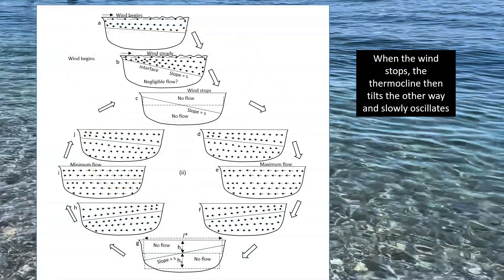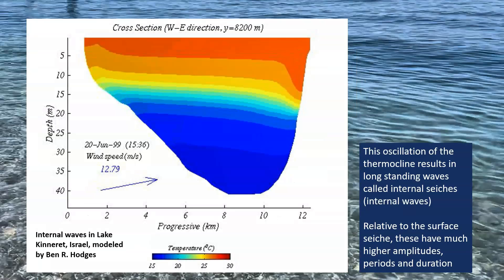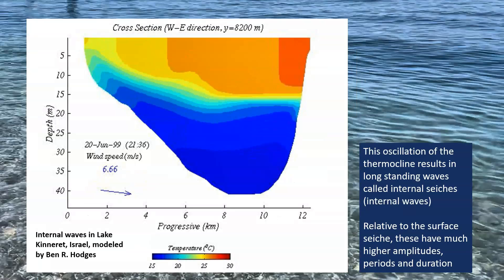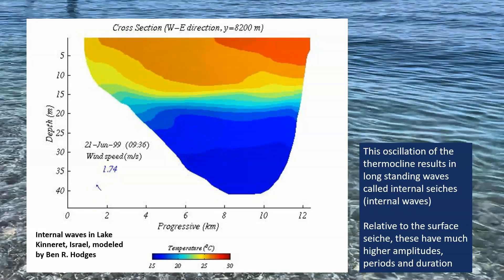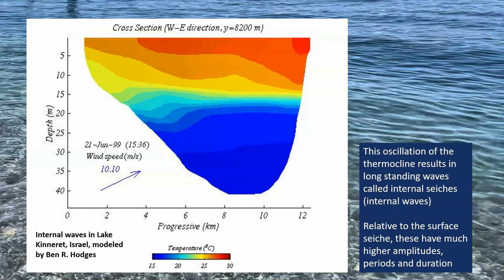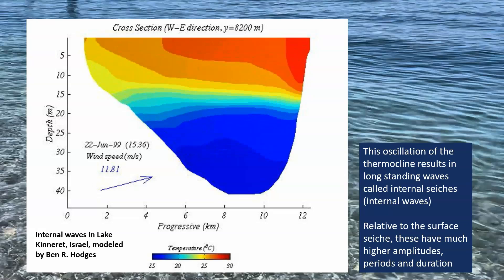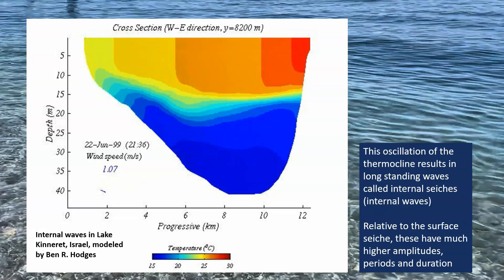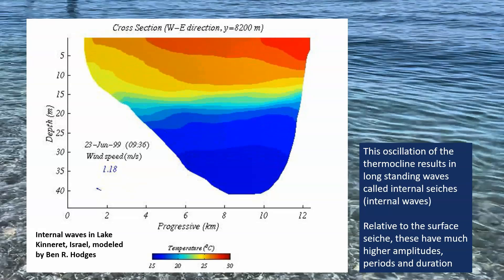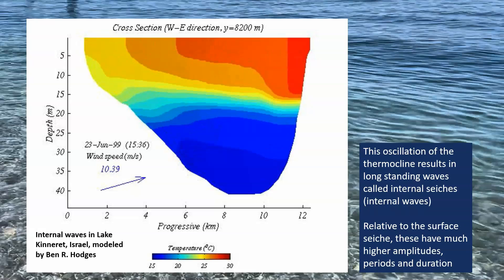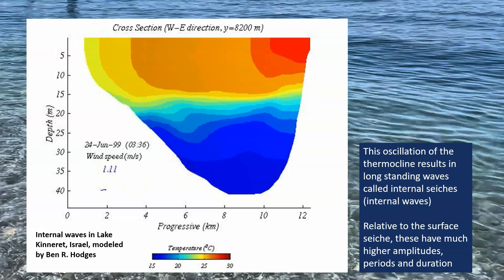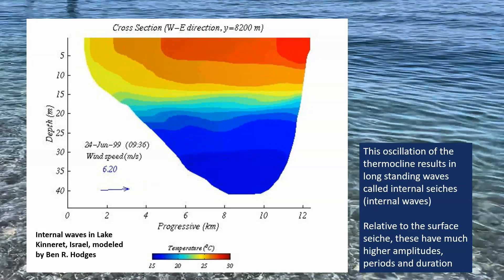When the wind stops, the thermocline tilts the other way and slowly oscillates. This oscillation of the thermocline results in long-standing waves called internal seiches or internal waves. Relative to surface seiches, these have much higher amplitudes and periods and longer duration.